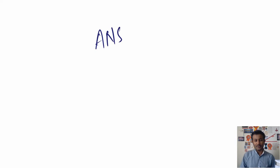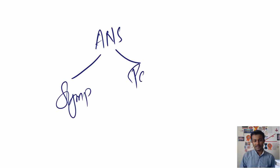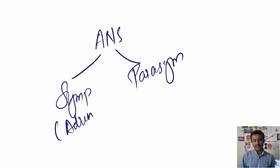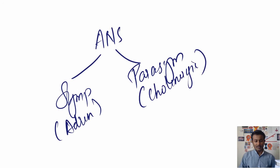Welcome back guys. Today we'll be looking at the autonomic nervous system. I apologize for the delay in making this video, but I had to get equipment like the webcam ready. Now finally you can see me, and I think it will be more personal this way. The autonomic nervous system is divided into two parts: the sympathetic system and the parasympathetic system. The sympathetic is also called the adrenergic system, and the parasympathetic is the cholinergic.